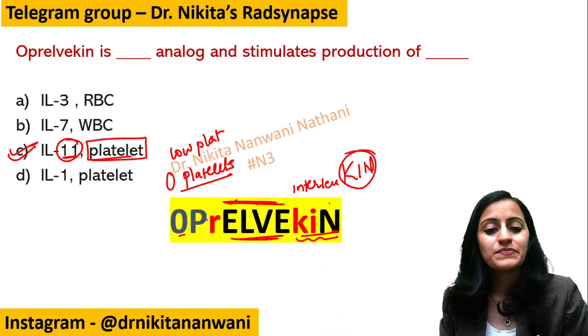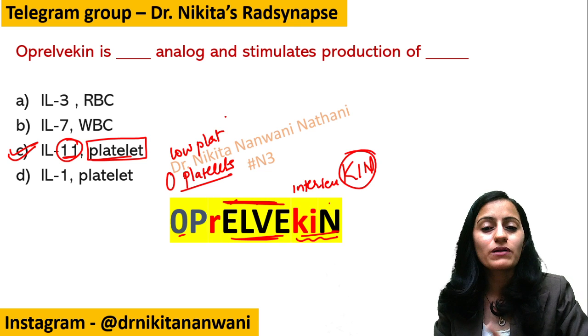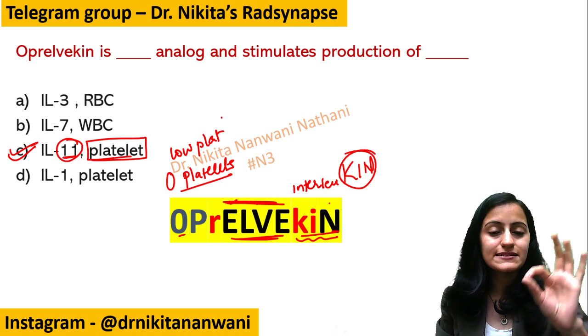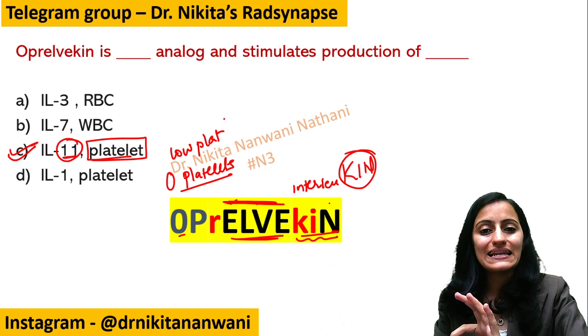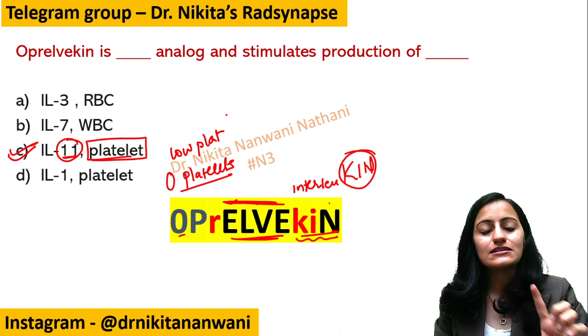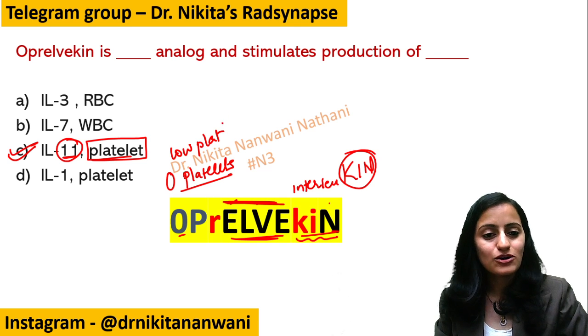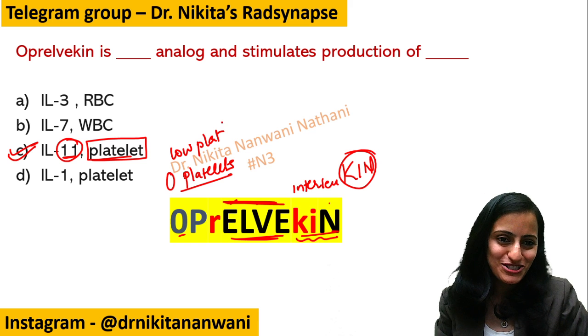So the answer is: Oprelvekin — remember O-P and 11 — is an interleukin 11 analog that stimulates platelet production.